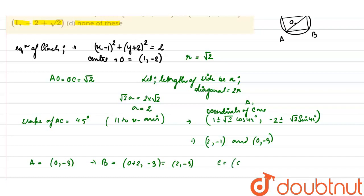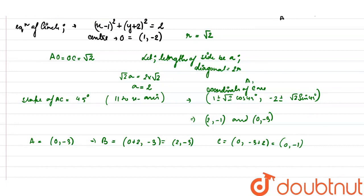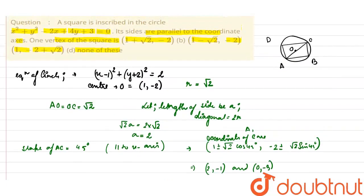And the coordinates of C = (0, -3 + 2) = (0, -1). Therefore, we can say that these are the vertices of the square which is being asked.